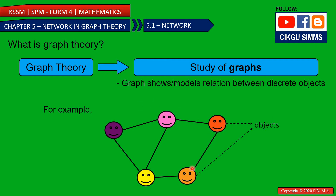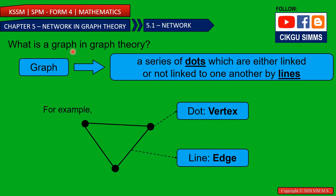These are called the objects. A graph in graph theory means a series of dots which are either linked or not linked to one another by lines. So there are dots and lines. The dots can be linked using the lines.